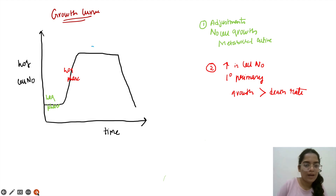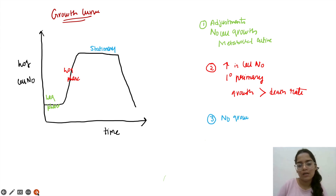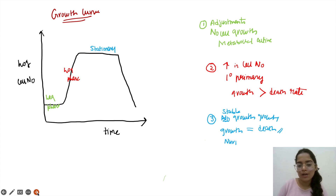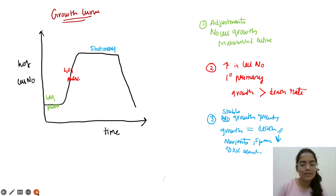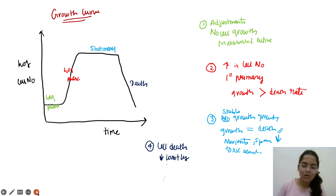The next phase is the stationary phase. In the stationary phase, there is no net cell growth — it is stable, meaning growing cells are equal in number to dead cells. Nutrients required for the organisms and the space decrease, and toxins accumulate. The last phase is the death phase or decline phase, where cell death occurs and the number of cells decreases constantly due to accumulation of toxic compounds.